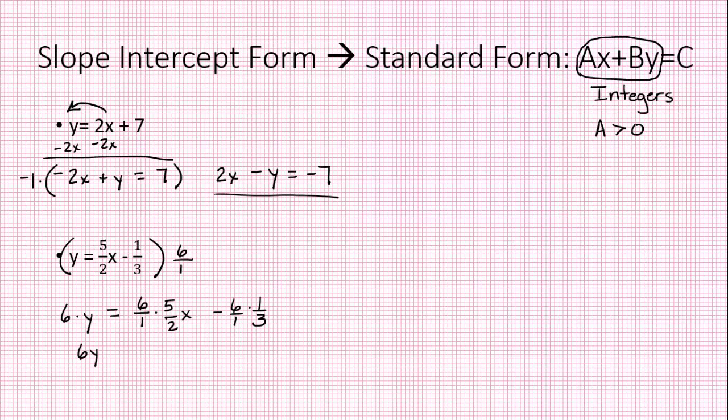Now anything that has a fraction is going to reduce down to a whole number. So I have 6y equals. Now let's do some reducing. I'm going to divide by 2. So what's left is 3 times 5. That's 15x. And that's where the fractions just melt away. Divide by 3 here. And I'm left with 2 times 1. Okay, that's not standard form yet but we did get rid of the fractions.